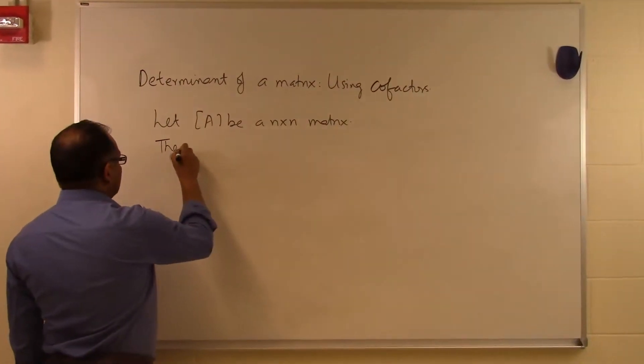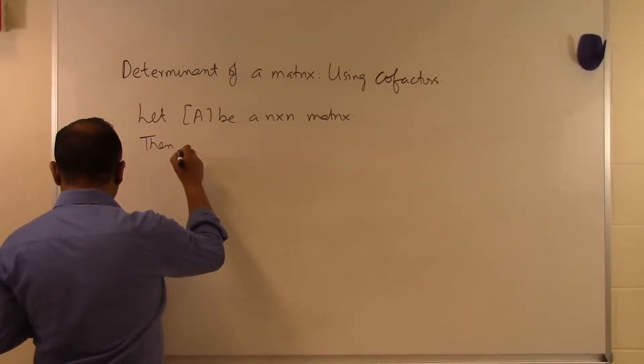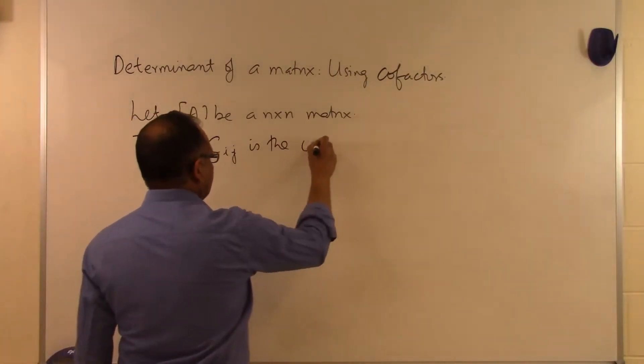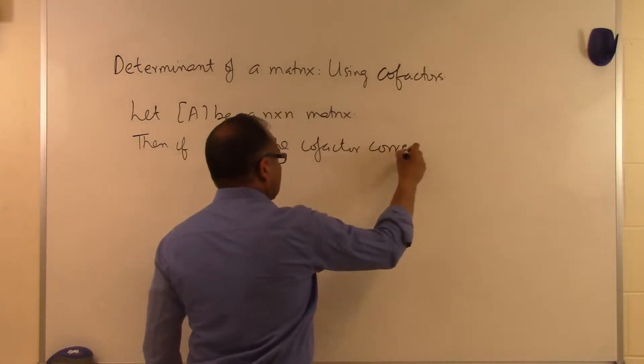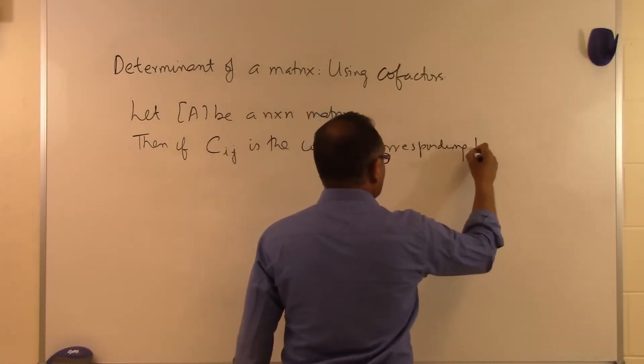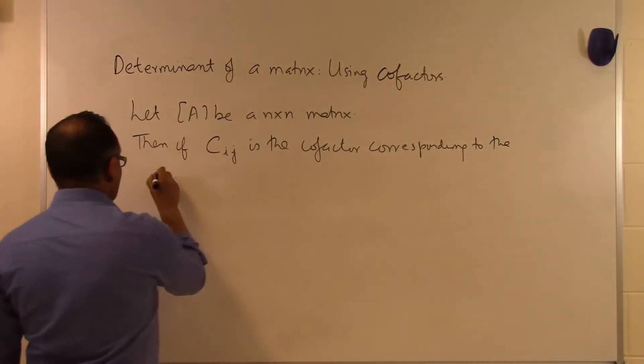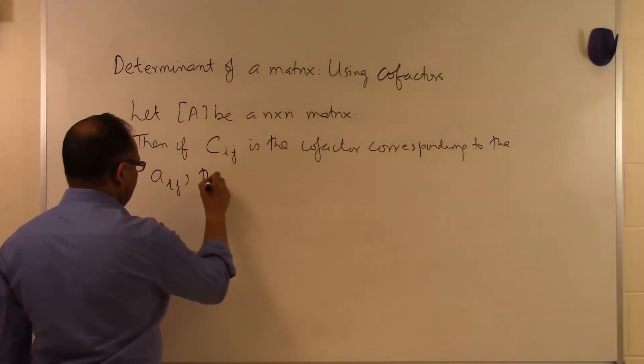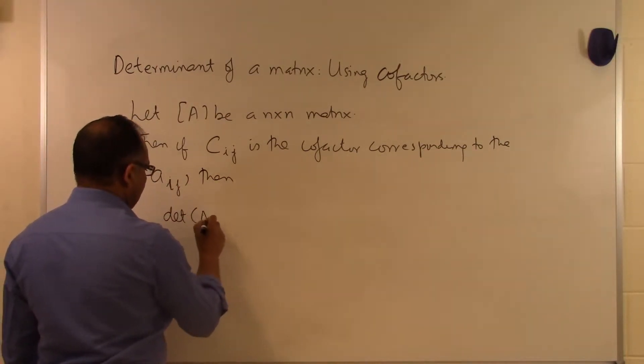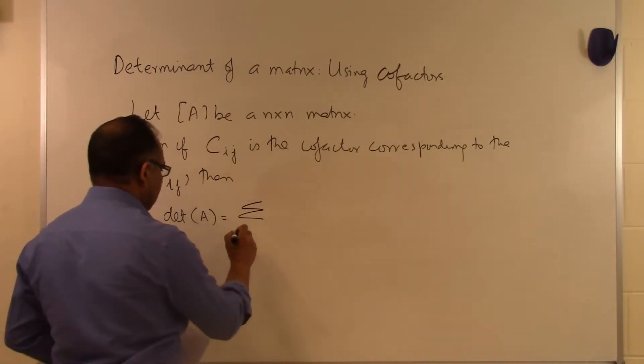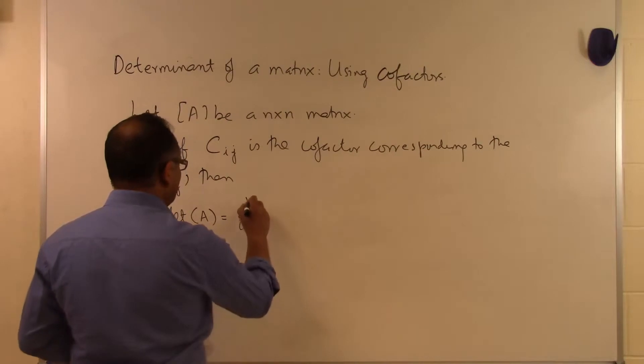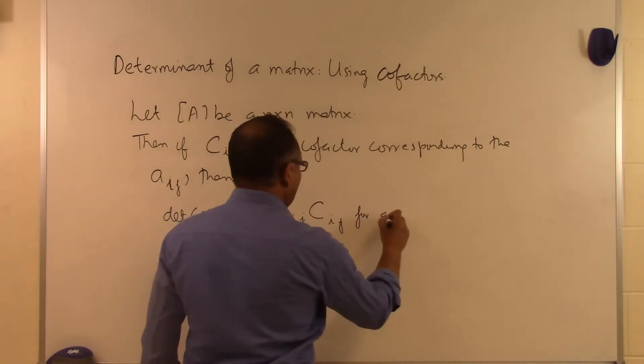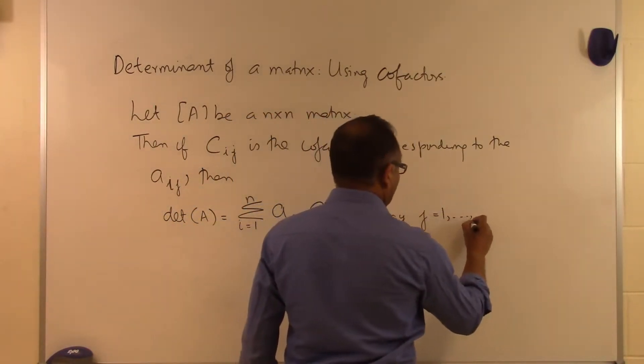Then if Cij is the cofactor corresponding to the Aij element, the determinant of matrix A can be found by summation i equals 1 to n of Aij Cij for any j equal to 1 up to n.